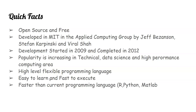Why is Julia faster? In the backend, it compiles like a C or C++ compiler, converting code into machine code that runs very fast. This also means you can run it on any system.